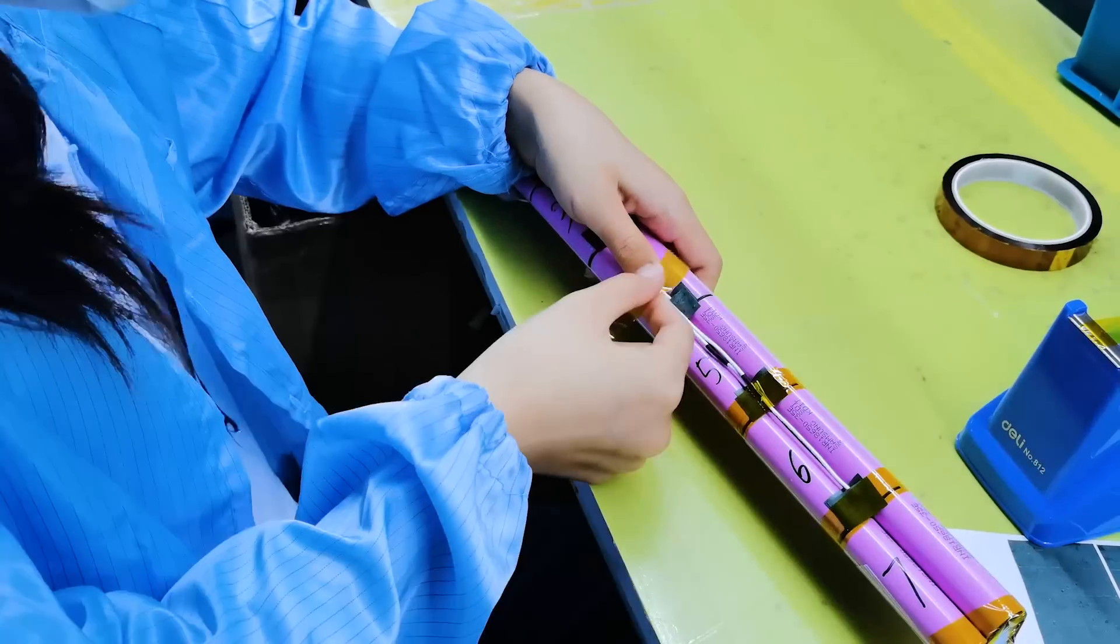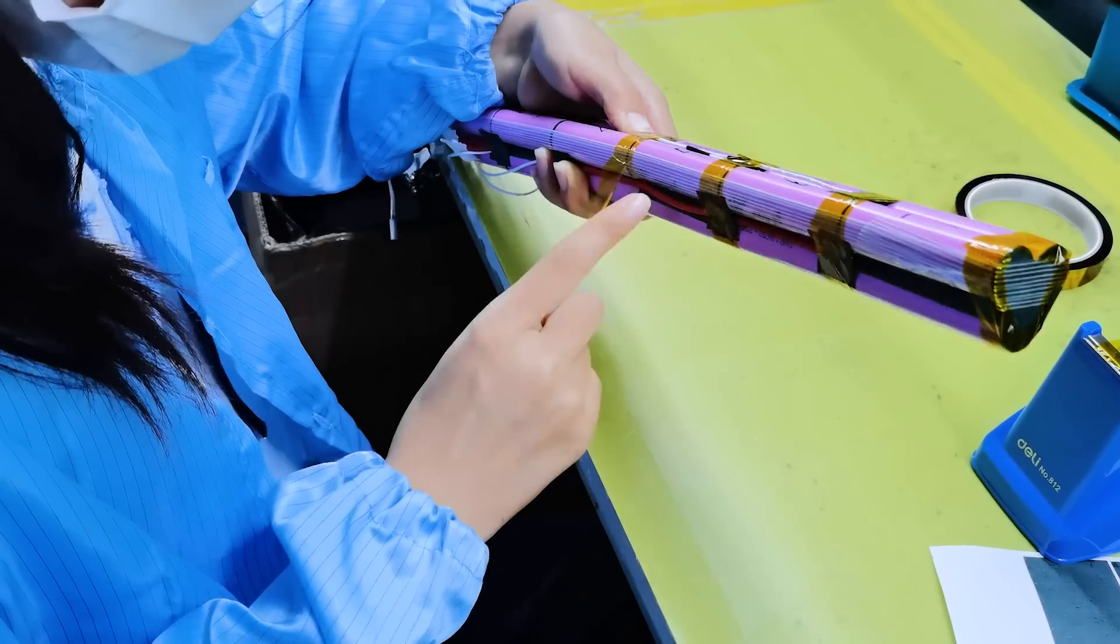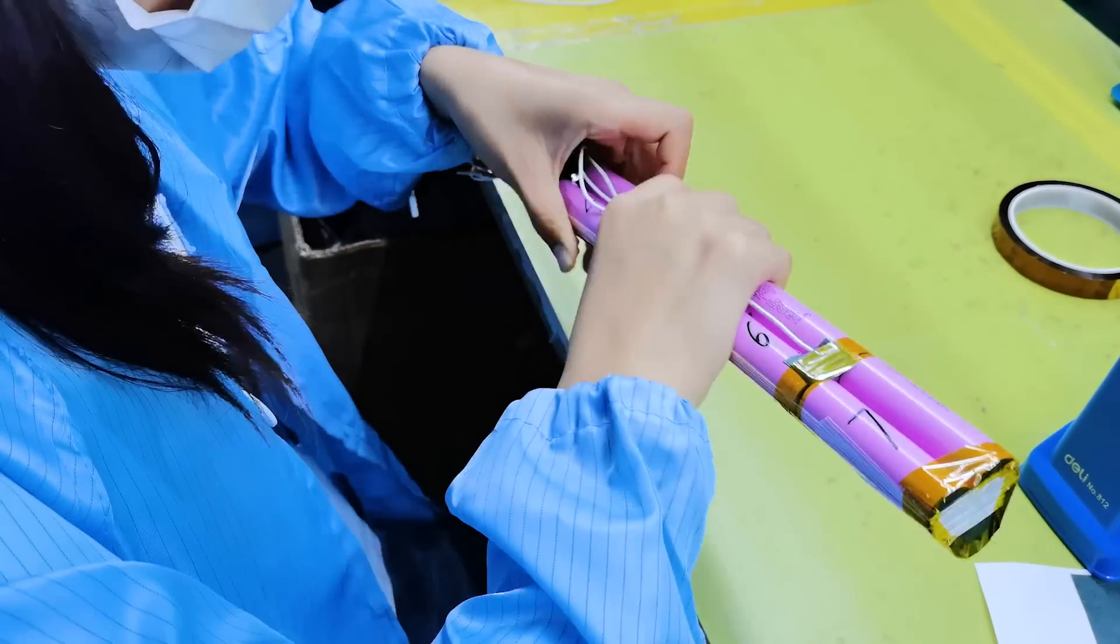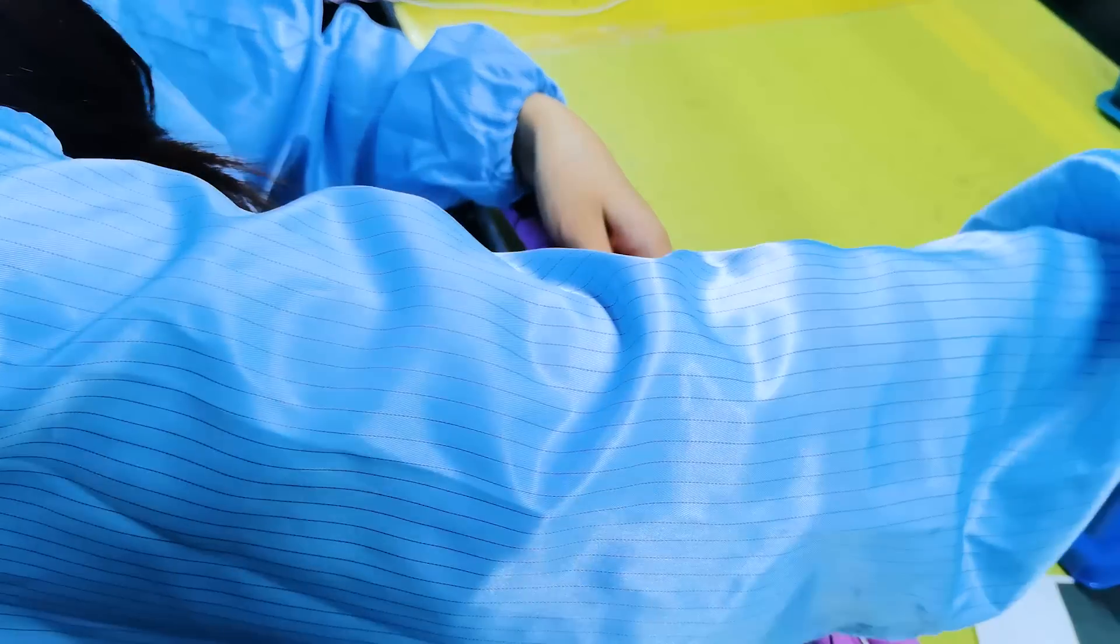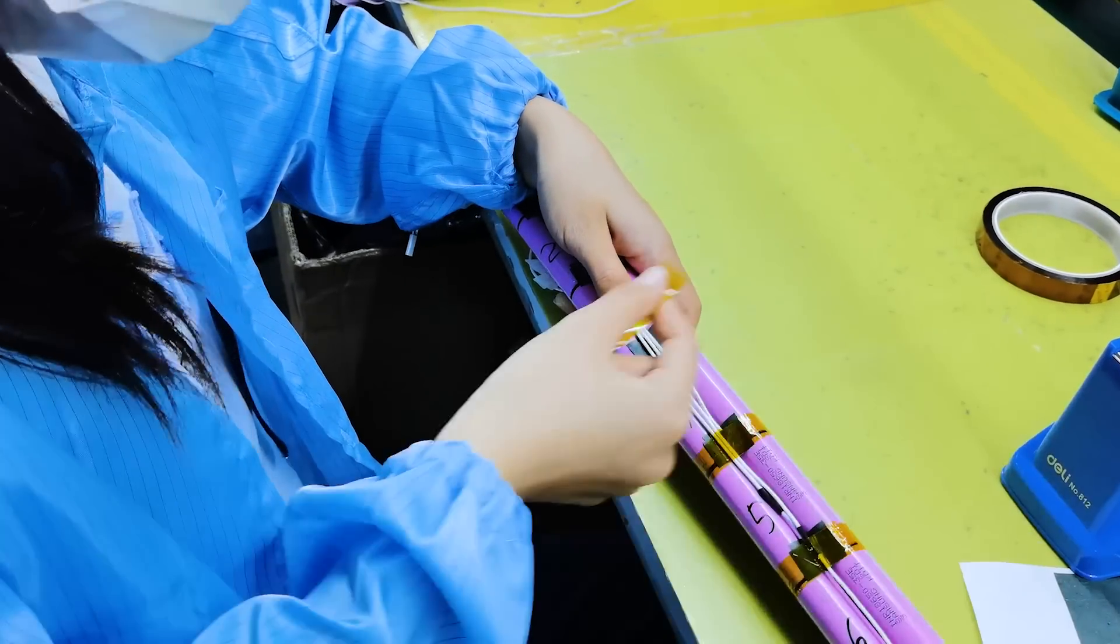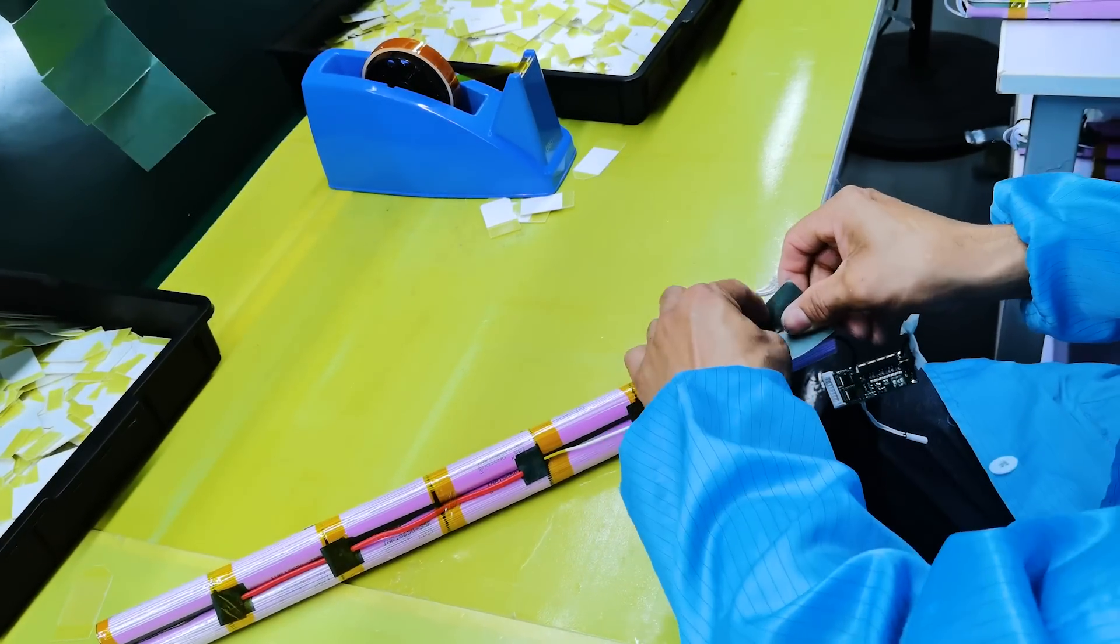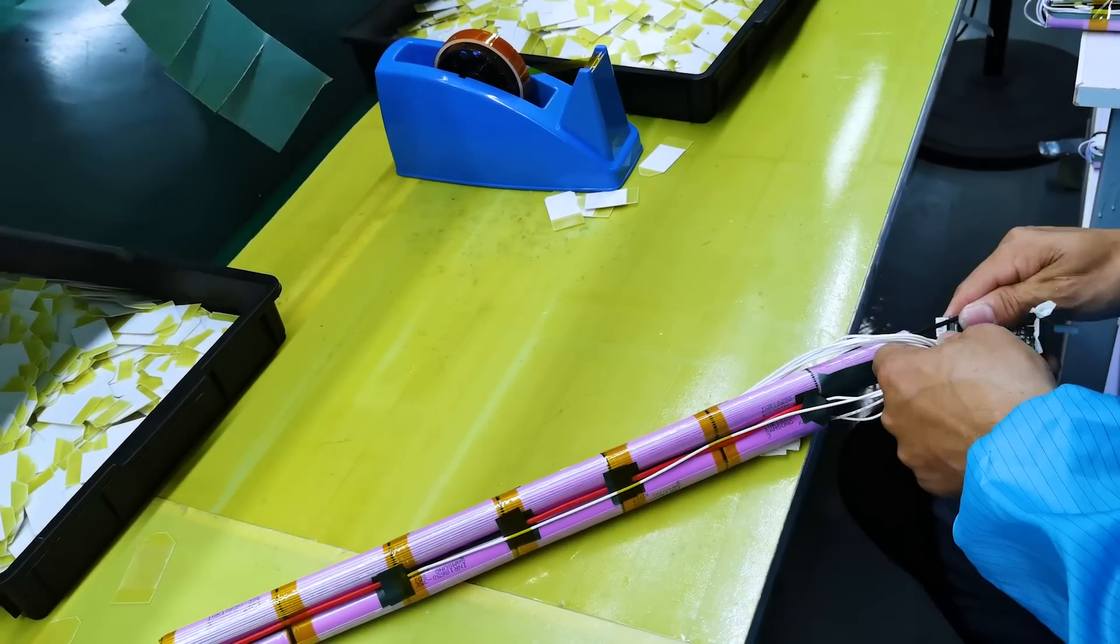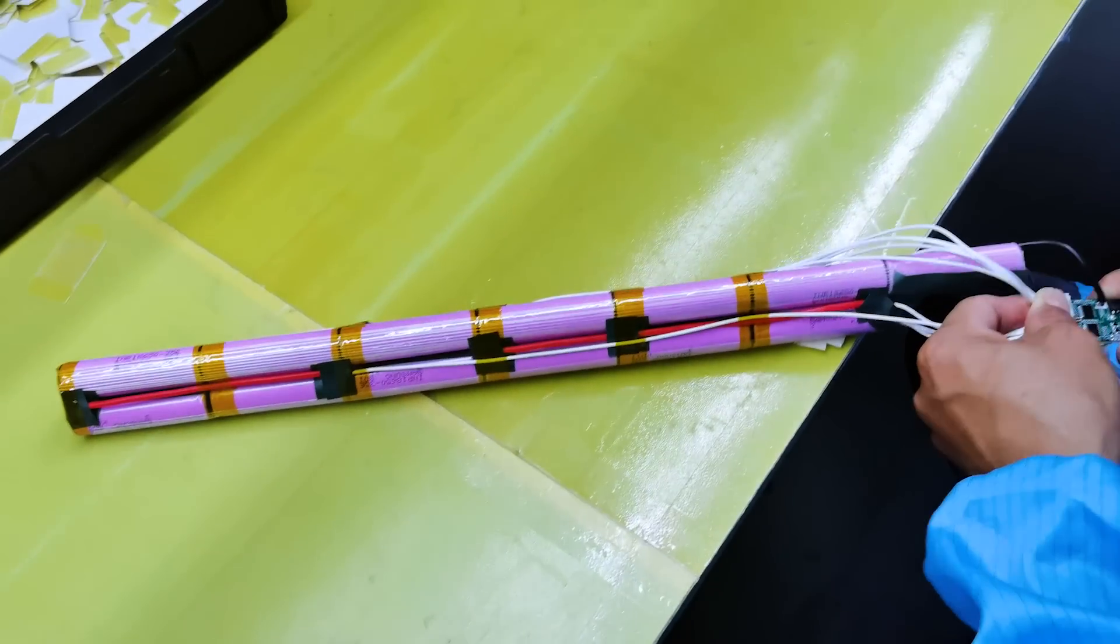This amber tape, a high temperature insulating tape, is applied to all the joints of the battery. Special props to our factory technician here who is keeping everything nice and clean and organized. Good wire management, that's what we love to see. An insulating card is applied to that group of only two cells at the end of the battery.